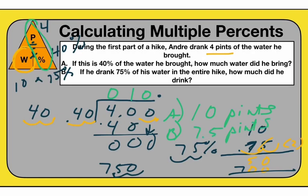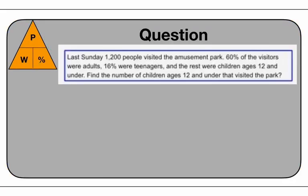The answer for part B is that Andre drank 7.5 pints of his water. He brought 10 pints and drank 7.5 pints — and that's just for multiple percents. This will lead you into your individual activity. Last Sunday, 1,200 people visited the amusement park. 60% of the visitors were adults. 16% were teenagers. The rest were children ages 12 and under.